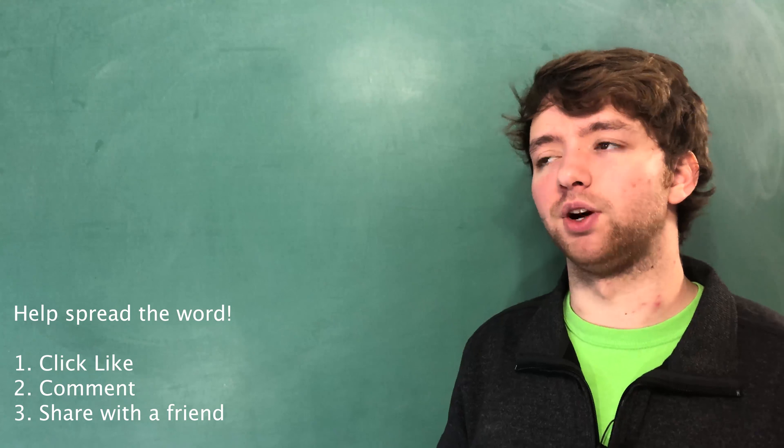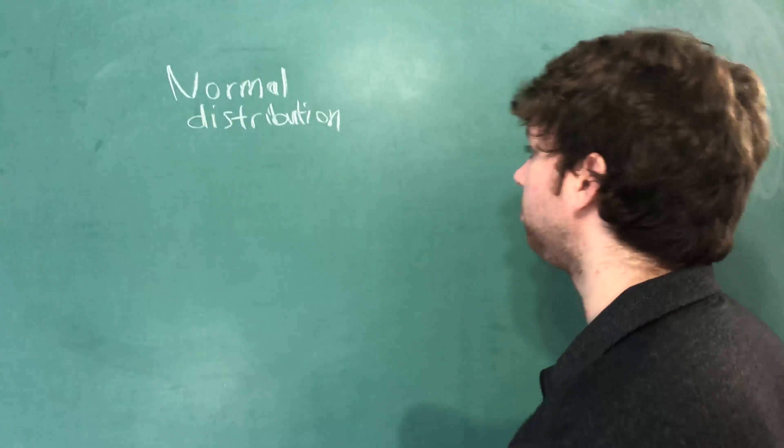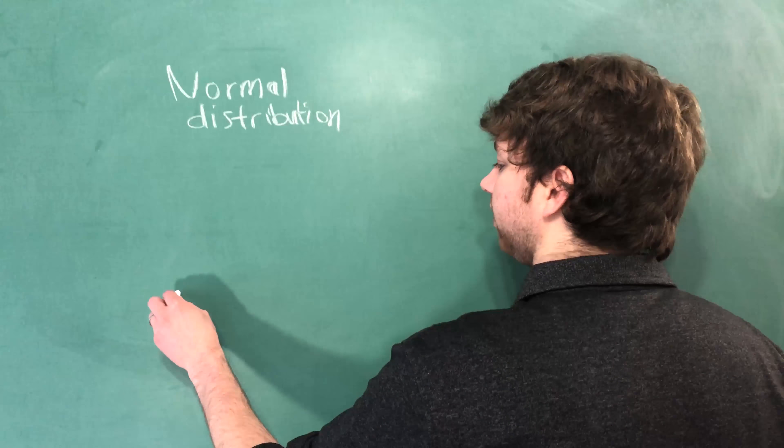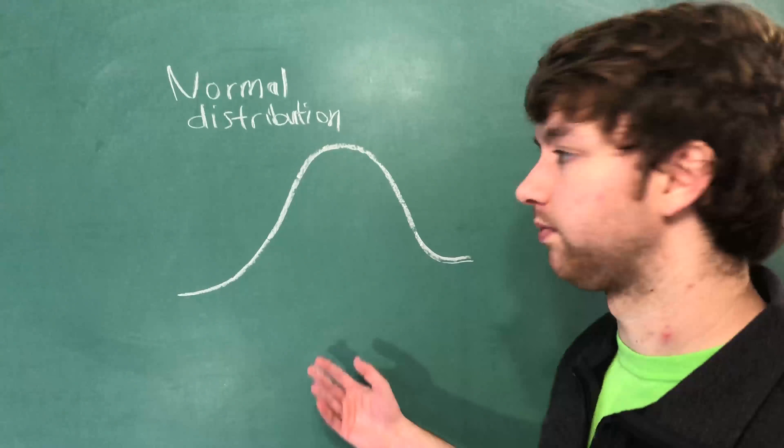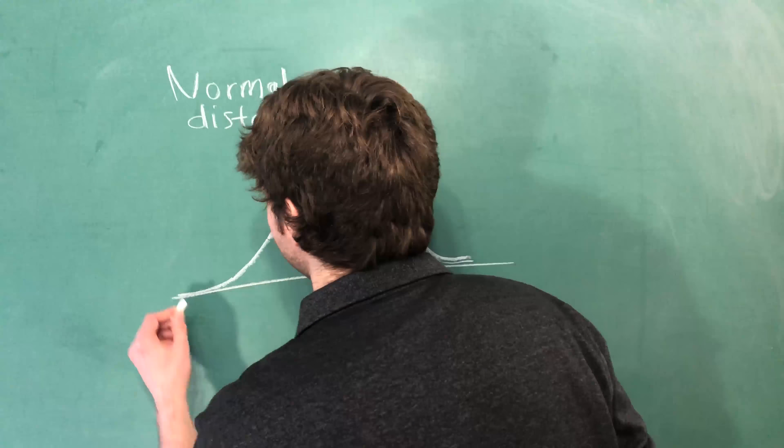The standard deviation is based on a normal distribution. A normal distribution is when we look at a particular feature for a bunch of data and we plot it, we get what looks like a bell. It makes sense when we're working with data that occurs naturally. Think of height for example — there are going to be very few very short people, a lot of average height people, and then very few very tall people. That's a normal distribution.